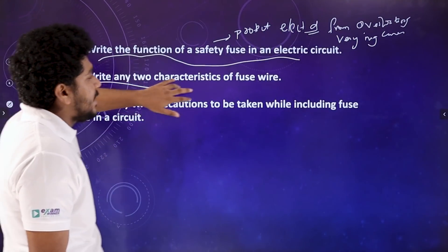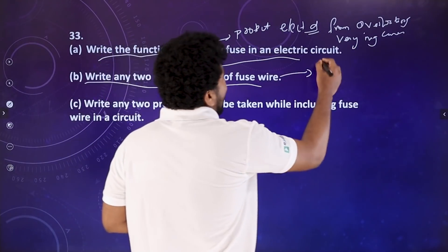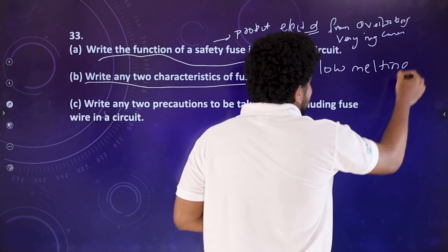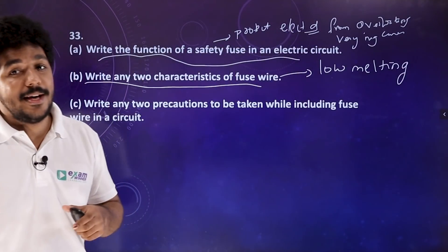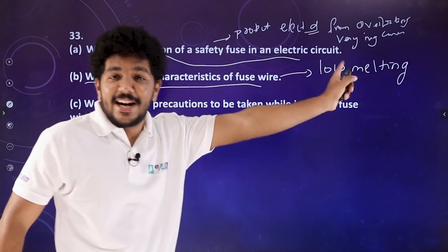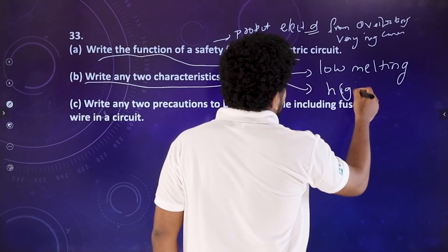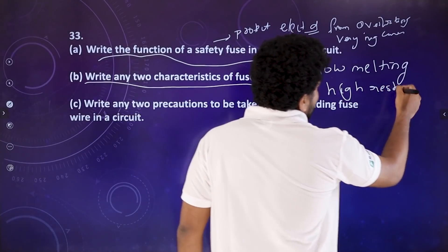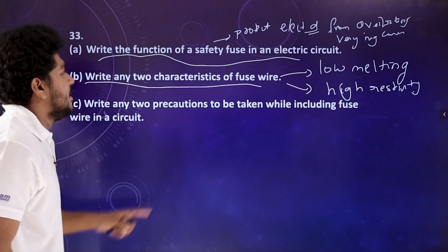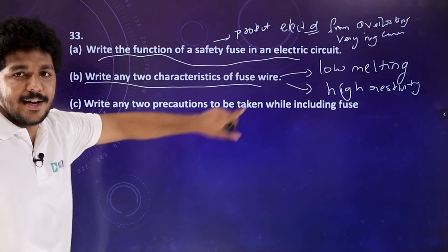Write any two characteristics of fuse wire. First: low melting point. Tungsten has a high melting point, but safety fuse wire has a low melting point. Second: high resistivity. The safety fuse is made of tin plus lead alloy — it has low melting point and high resistivity.